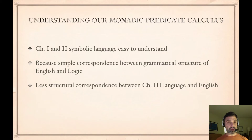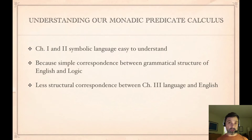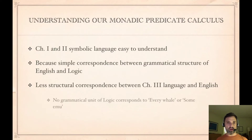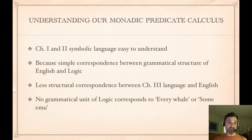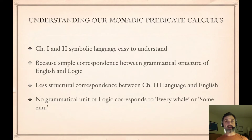That simple structural correspondence we have in chapter 1 and 2 is lost when we get to chapter 3. There is still a correspondence between the natural language we're going to be symbolizing and the symbolizations we're going to produce — between the English language and the logical language — but it's a more complicated correspondence, and it's not as straightforward. In particular, we have phrases like 'every whale' and 'some emu' in the English that we symbolize, but there's no one unit in the logical language that corresponds to the unit 'every whale.' So we don't have a nice unit-by-unit correspondence. There is a correspondence, but it's a more complicated one, as we'll see.